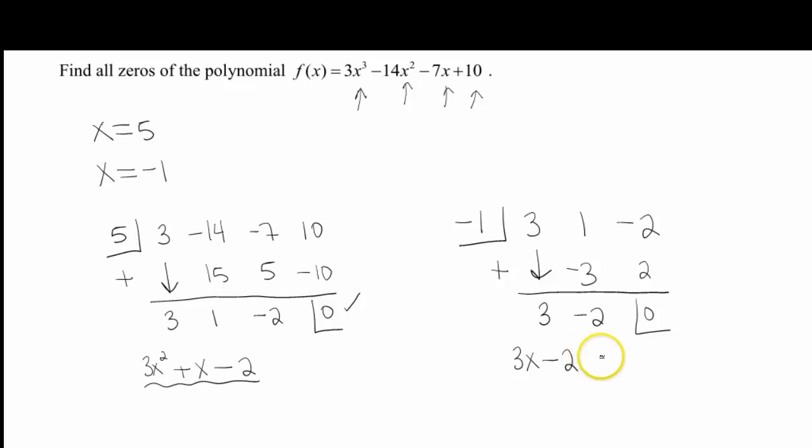But remember, we're trying to find our 0s. So if I set this equal to 0, I can go ahead and solve for x. So move our 2 over. 3x is 2. Divide by 3. x is 2 thirds. So my 0s are, let me list them out over here nicely. 5, negative 1, and 2 thirds.